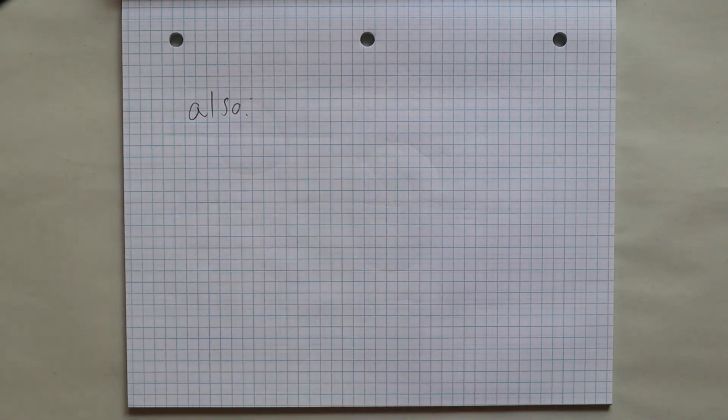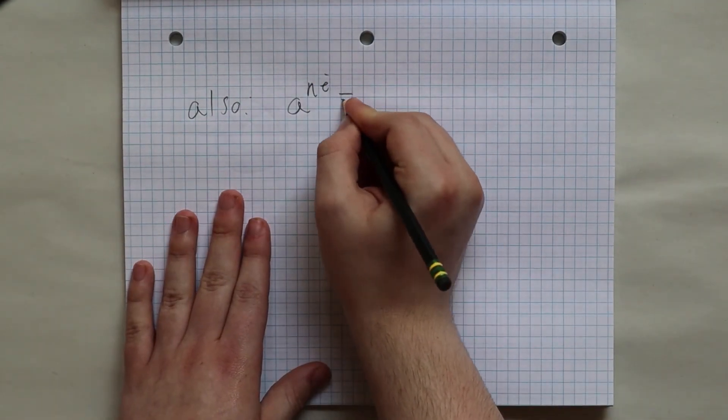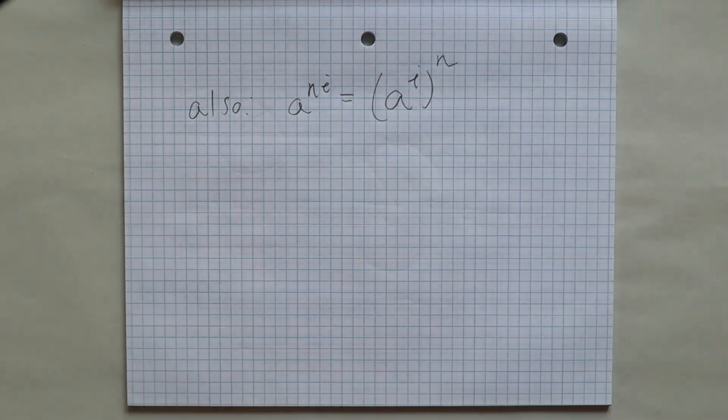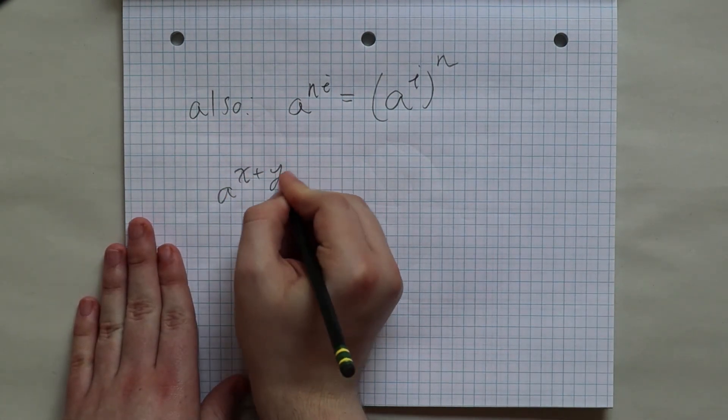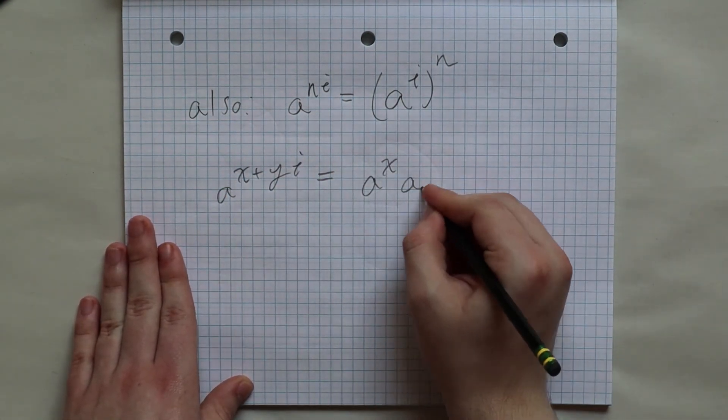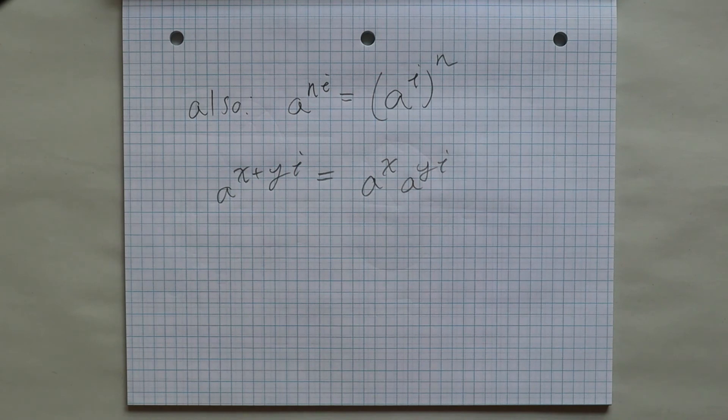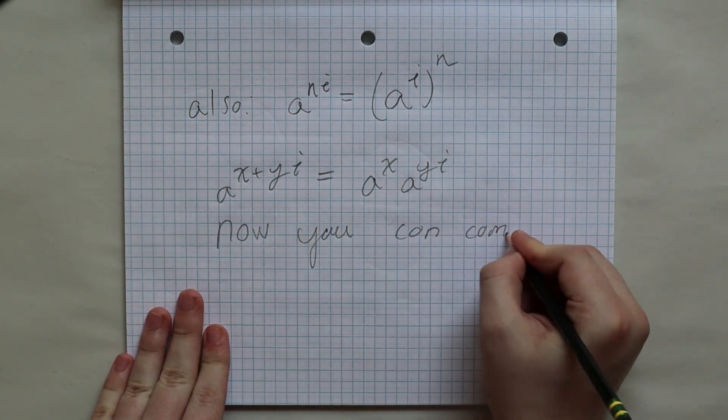Also to take a to the 2 ith power, just square that last one, and to take a to the 1 plus ith power, this is actually really easy. Just multiply a to the first times a to the ith to get your answer. This comes straight out of our exponential properties.